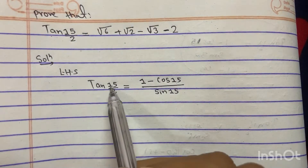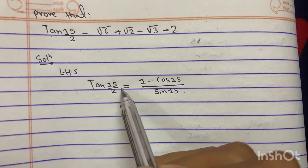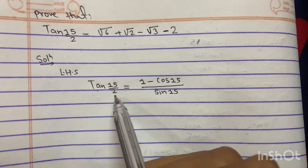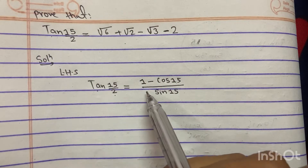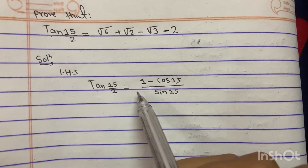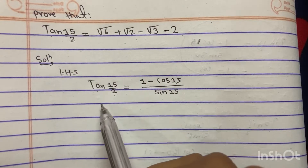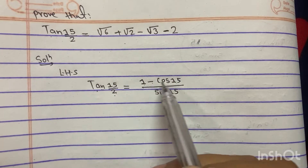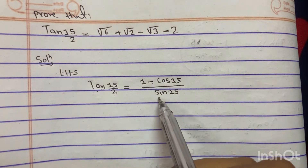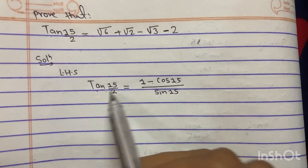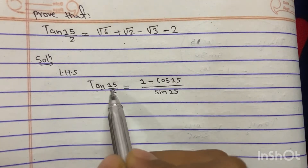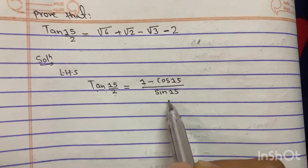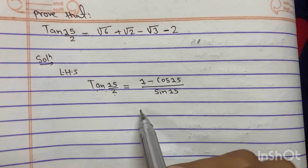If we consider this as tan(15/2), then we can use the sub-multiple angle relation: tan(A/2) equals 1 minus cos A by sin A. So I use the formula tan(15/2) equals 1 minus cos 15 by sin 15.